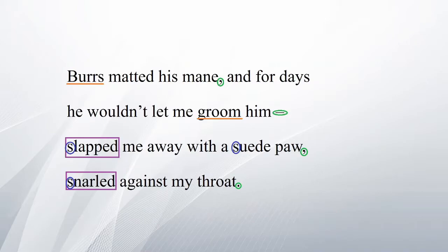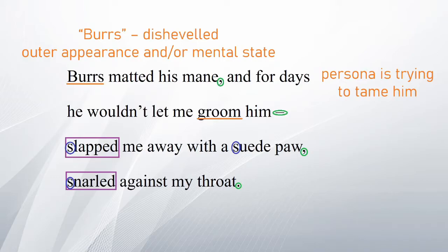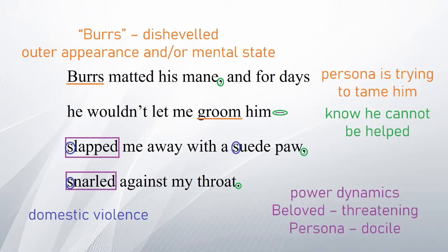'Burrs matted his mane.' A burr is an unwanted rough edge or ridge left on an object, so this gives the picture that the lover is disheveled — descriptive of his outer appearance, mental state, or both. 'For days he wouldn't let me groom him' — the persona is trying to tame him, bringing in the idea of the taming of the shrew. The lover does not seem keen, and the persona feels deprived of the opportunity to improve his lifestyle. The paws at the end may show both know he cannot be helped. 'Slapped me away with a suede paw, snarled against my throat' — these two lines give the idea of domestic violence, showing the power dynamics and how threatening the beloved is.